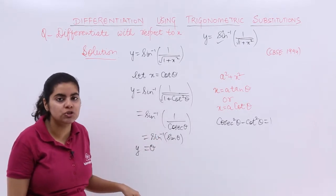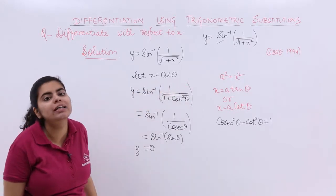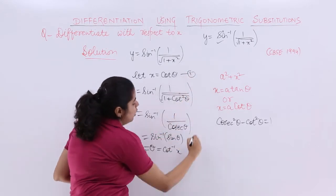I hope till now it is understood. Now what is the value of θ? From our substitution, θ = cot⁻¹(x).